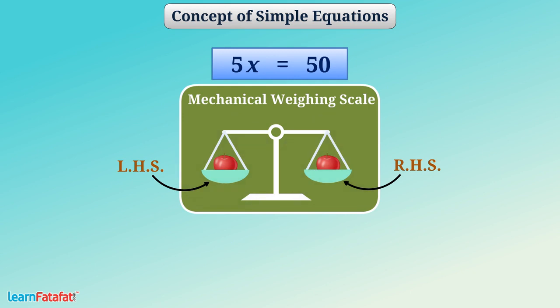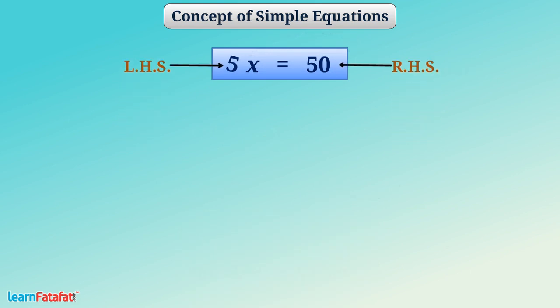In the same way, we can go on doing operations on both sides to reduce the equation in the form variable is equal to value. Let's try it for this equation. Here, we have to eliminate 5 from LHS. 5x is same as 5 multiplied by x. Since 5 is multiplied to x, so to eliminate it, we have to divide LHS by 5.